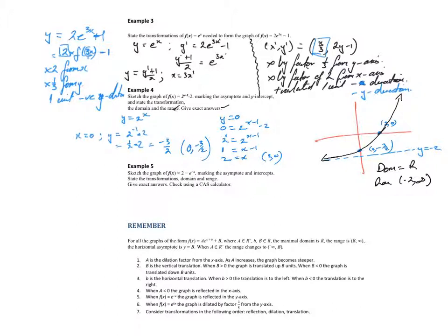Range, domain. State the transformations. I think in this one, from the graph we can see I'll come over here. We've moved it, the negative 1, let's move to the right one unit. And the negative 2 is we've moved in the negative y direction by 2 units.